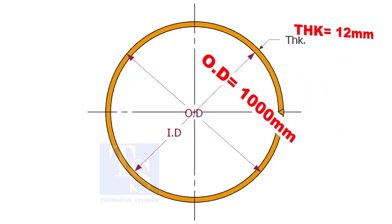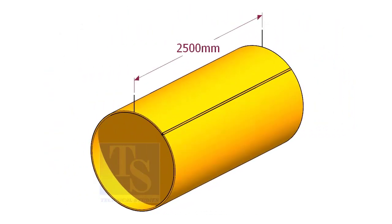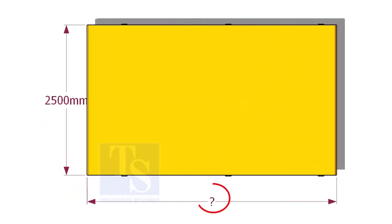Assume that we need a pipe with an inside diameter of 1000 mm and thickness is 12 mm, and the length of the pipe 2500 mm. What will be the length of the plate?